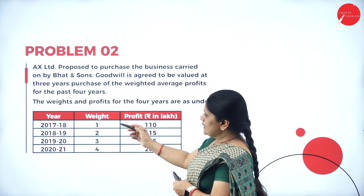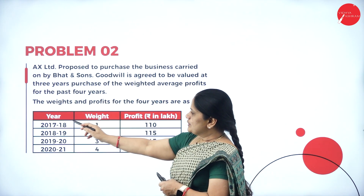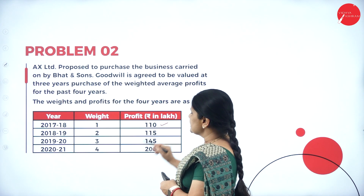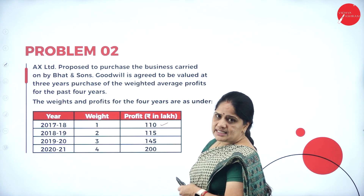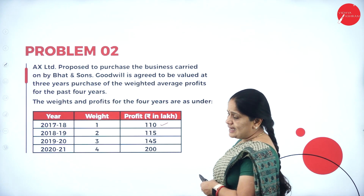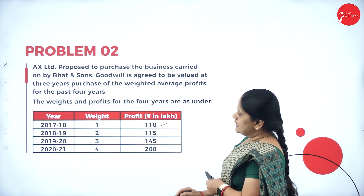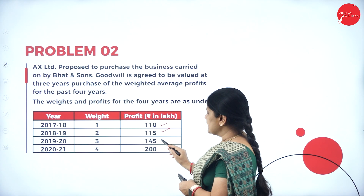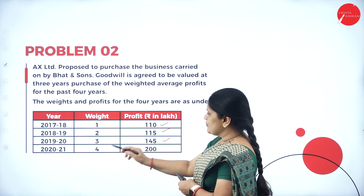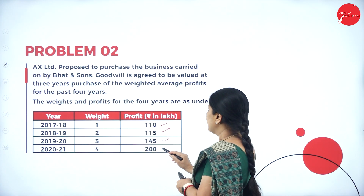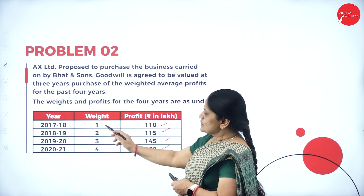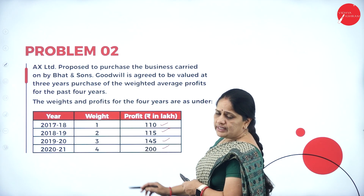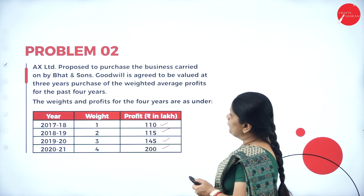From 2017 to 2018 the profit is 110 lakhs; 2018-19 it is 115; 2019-20 it is 145; and 2020-21 it is 200. The weights are given as 1, 2, 3, and 4.